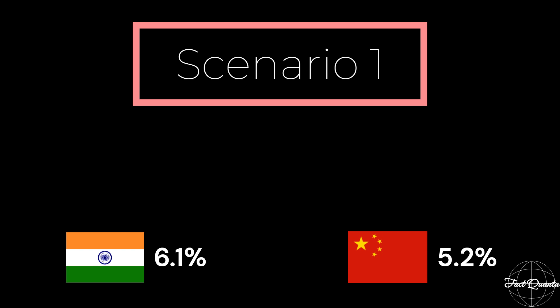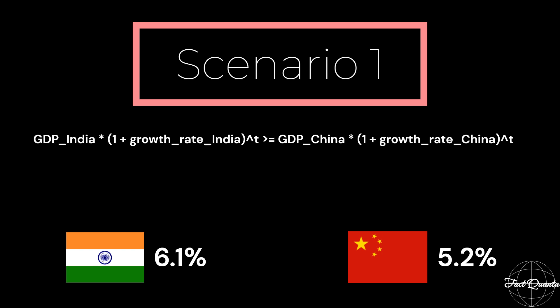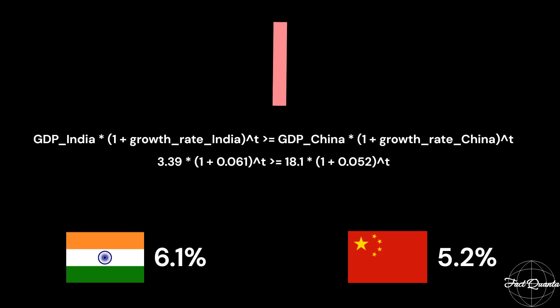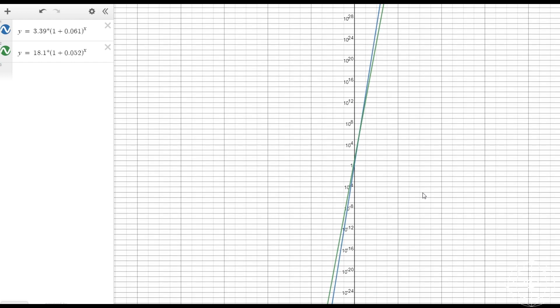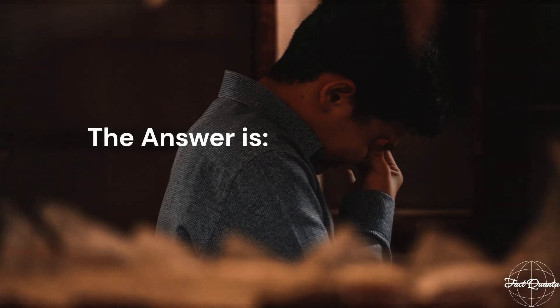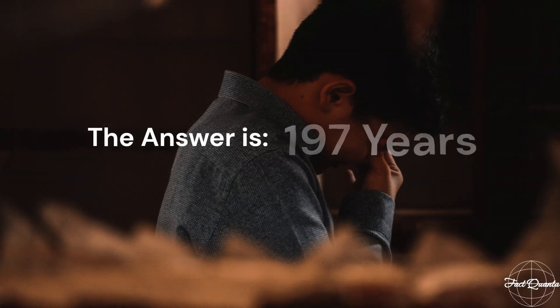Let's assume these growth rates remain fixed for all subsequent years. To determine when India's GDP overtakes China's GDP, we need to find the smallest value of T that satisfies this condition. Using the GDP figures from the last year as the initial values, we can plot the growth curves for each country and find the point where these two curves intersect — representing when India's GDP overtakes China's. The answer is a whopping 197 years.